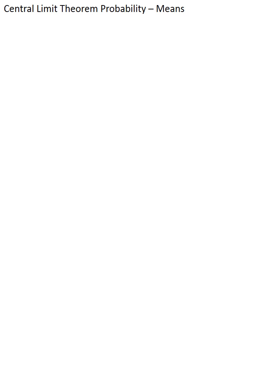Let's examine another question. Here's the new situation. We have a population of students that spends a certain amount of time watching videos. The population average is 45 minutes and the population standard deviation is 15 minutes. Suppose we took a random sample of 20 of these students. Let's find the probability that the sample average would be within three minutes of the expected average of 45 minutes.